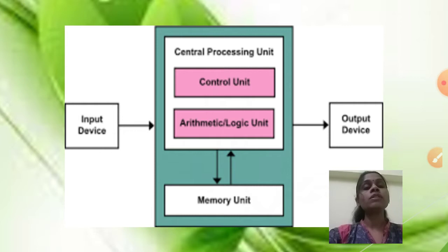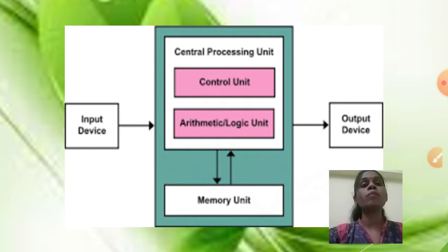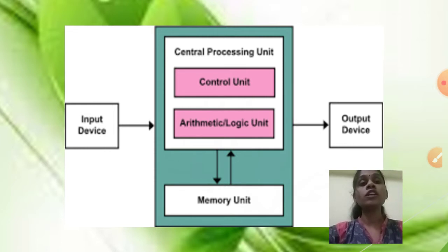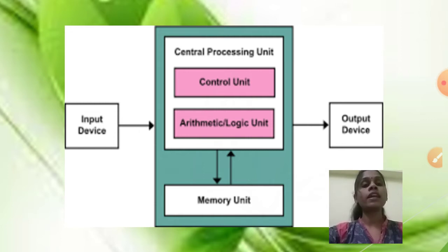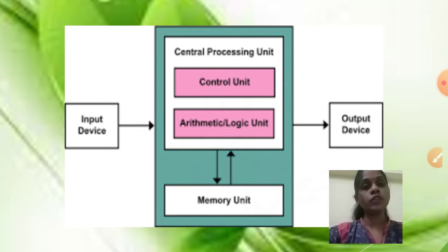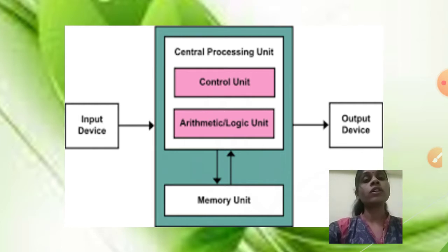So two types: the Control Unit means the CPU is controlling each and everything — all processing is controlled by the Central Processing Unit. The Arithmetic and Logical Unit handles all calculation purposes inside the computer. After that, the Memory Unit — the work of memory unit means storage. Whatever you are writing in Word or doing in PPT is stored inside the Memory Unit — saving and all those things go inside the Memory Unit.